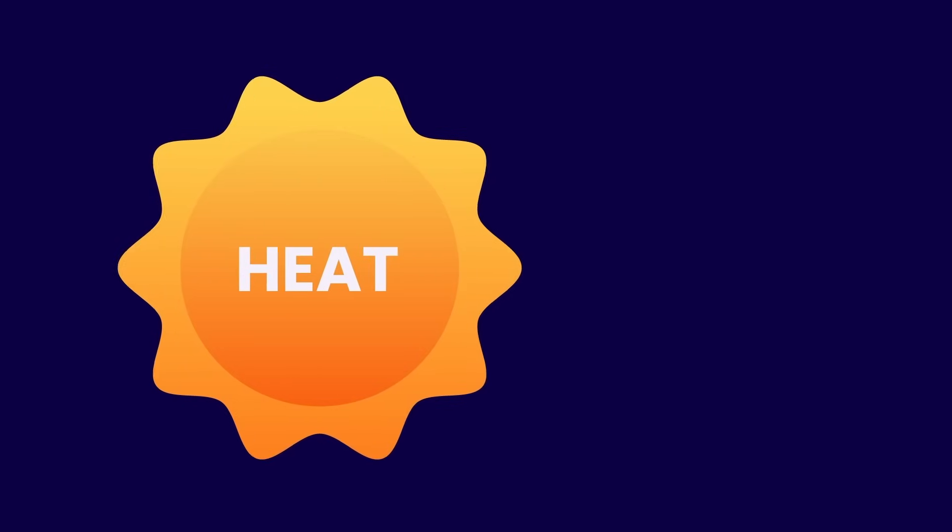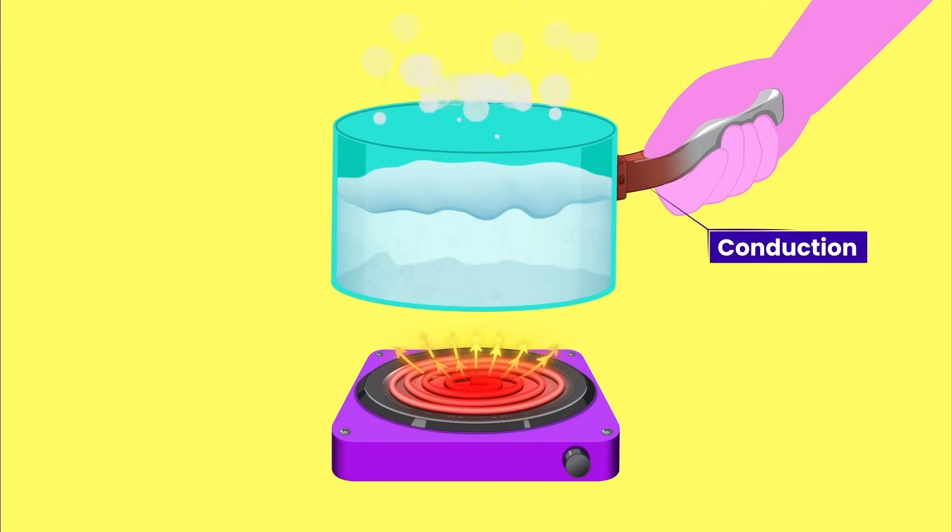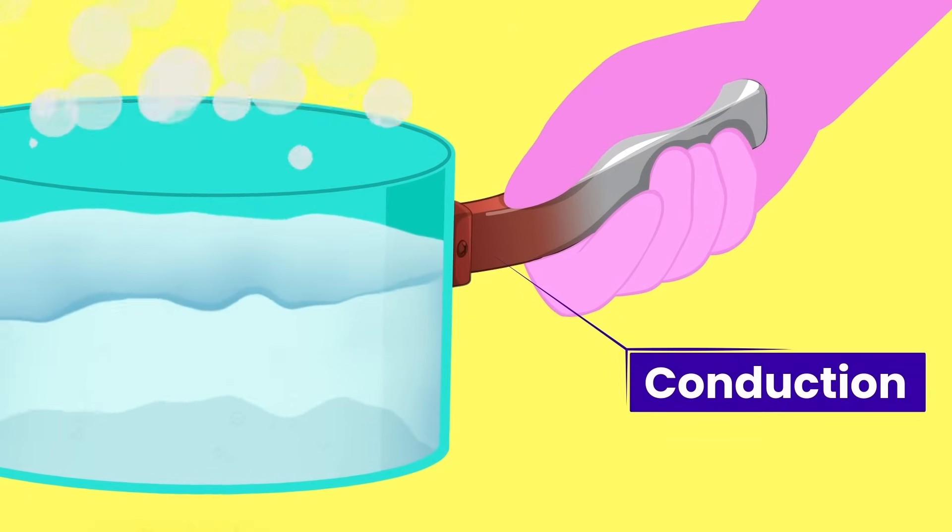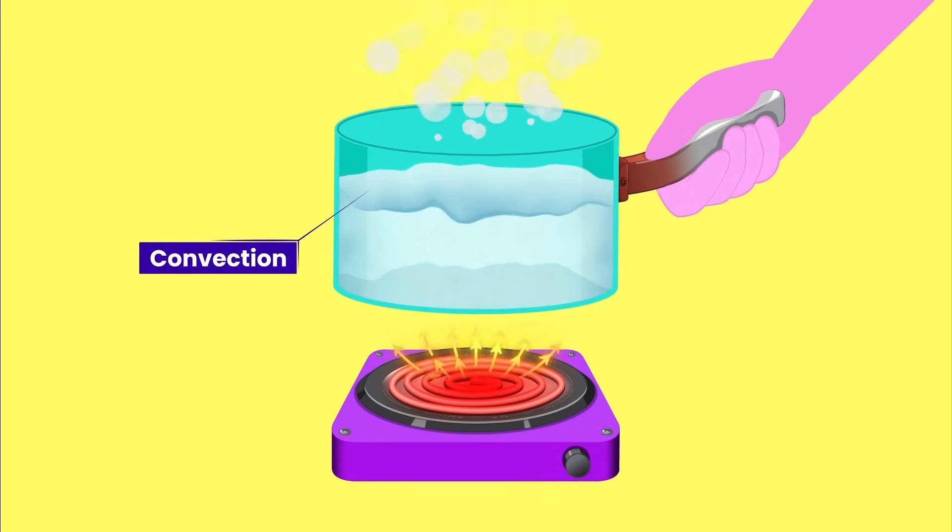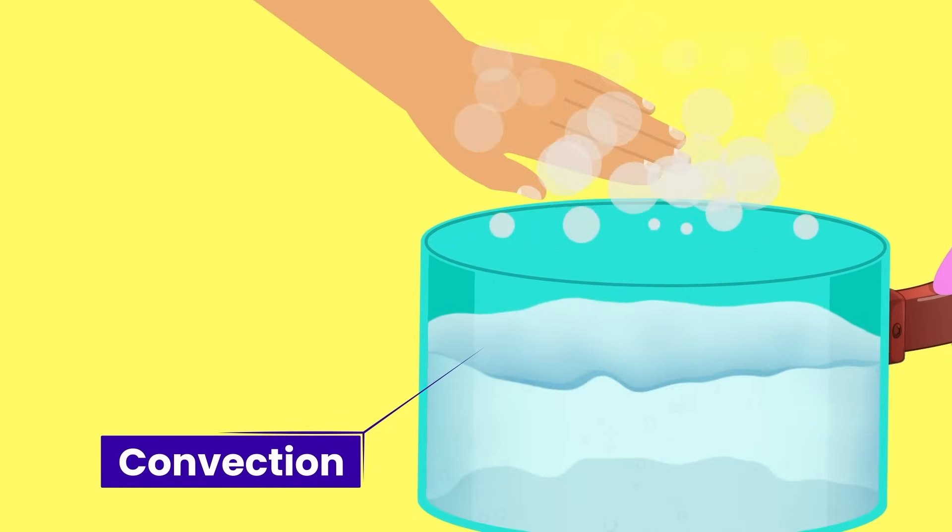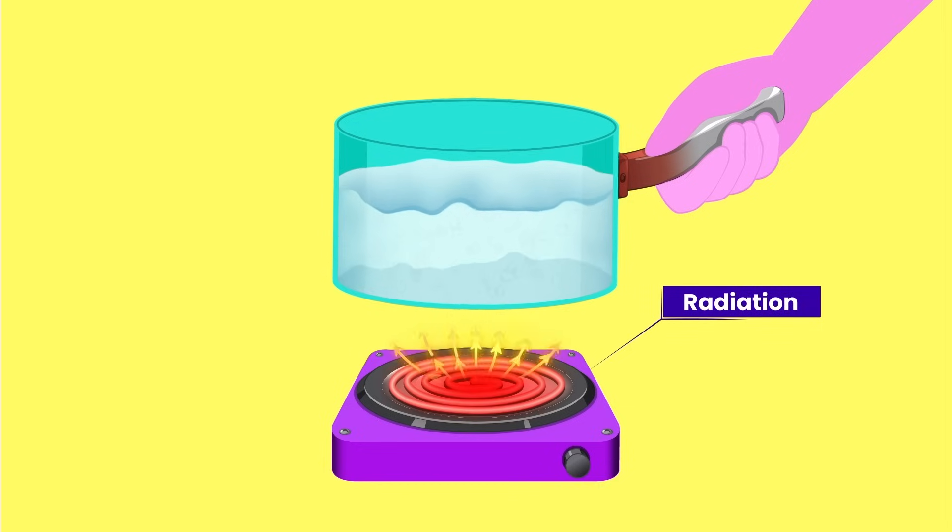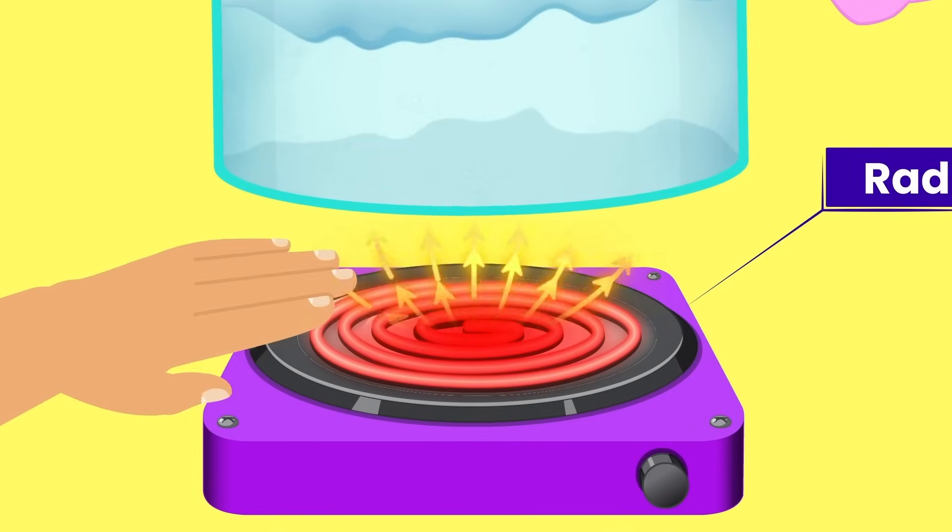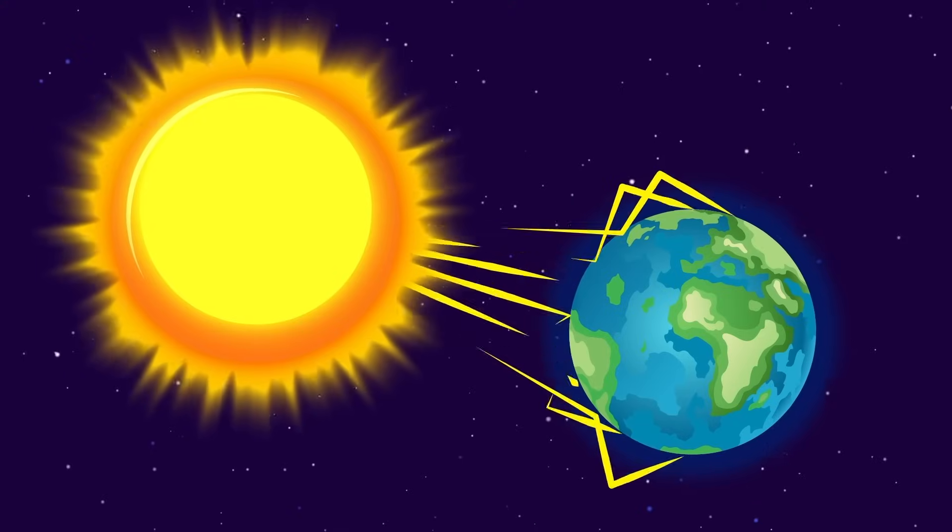Heat is transferred in three ways. Number one, conduction. This is where heat is transferred by direct contact, like when you touch a hot stove. Number two, convection, where heat is transferred through fluid, like in the boiling water inside the pan on that hot stove. Number three, radiation, where heat is transferred through electromagnetic waves, like from the fire beneath the pan. This is also how the sun's heat is transferred.